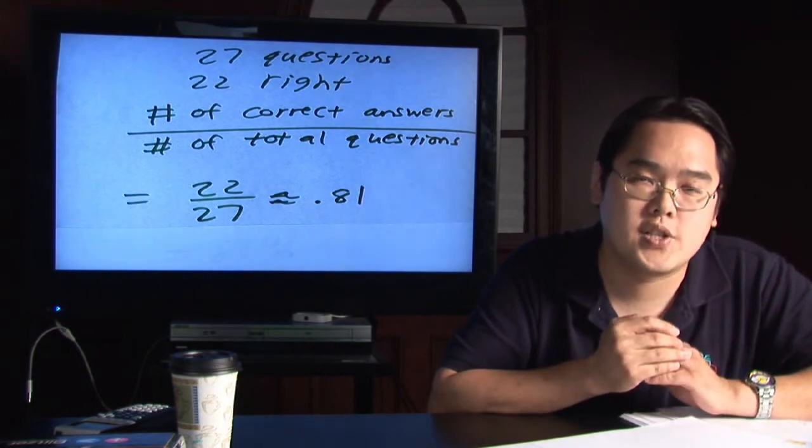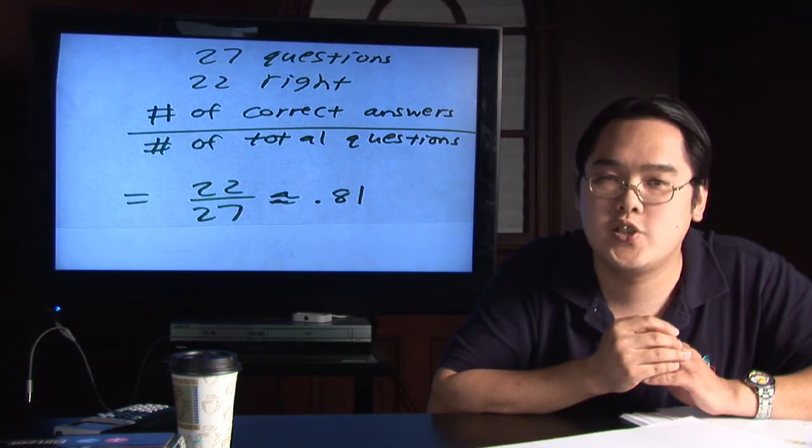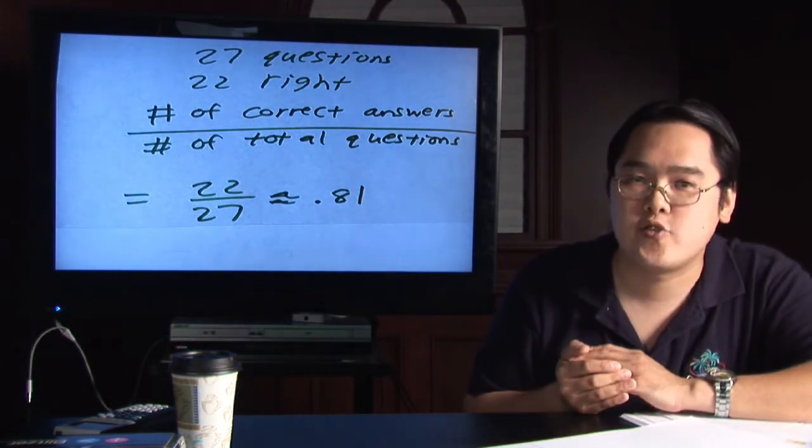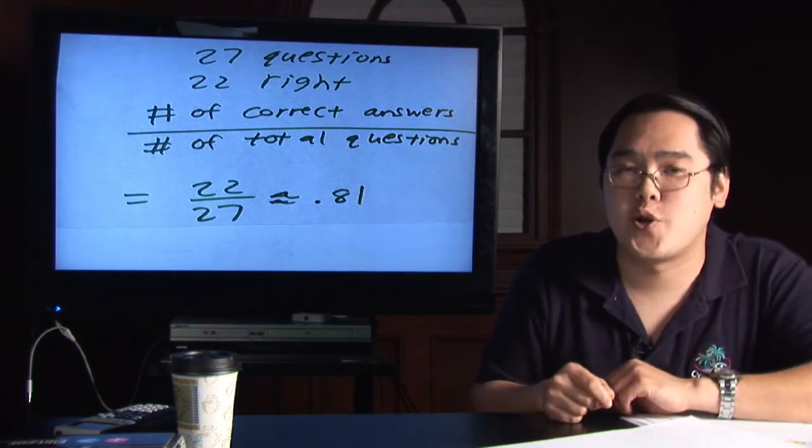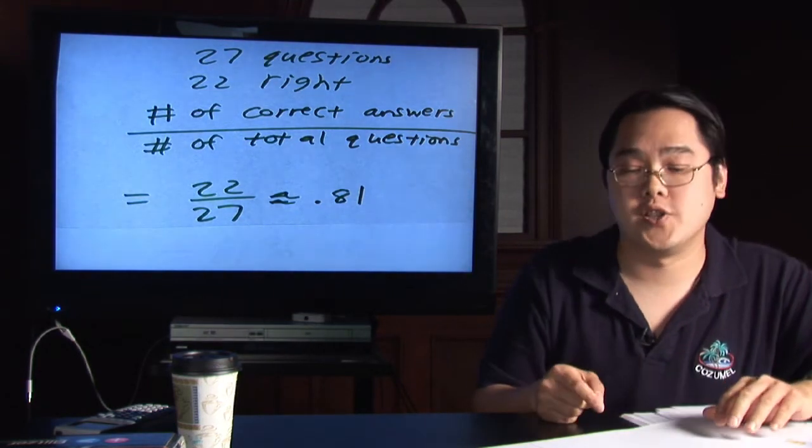Now those two decimal places gives you exactly the percentage score that you need because the only thing to do after that is to convert the decimal, shift it to the right two places, and you're going to get the percentage answer. As you can see, .81 after shifting the decimal is 81%.